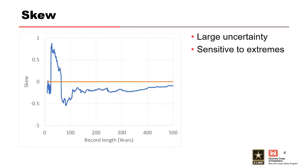Because at-site records are relatively short, the SKU parameter has large uncertainty — much more than the mean or the standard deviation for a data set. It's the most uncertain of all three parameters. In this example, you can see how long it takes for an at-site SKU estimate to stabilize at a value approaching the true SKU value. It ranged all over the place, and even in 500 years of record length, it doesn't converge to the true value.